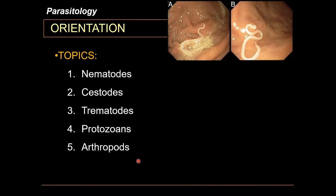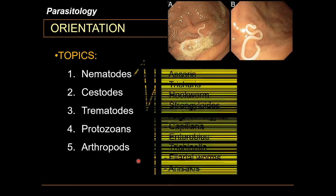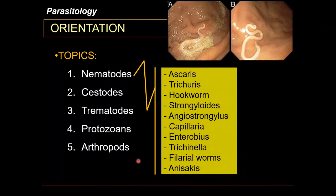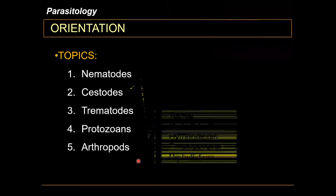Please memorize the parasites belonging to each classification, at least at the genus level. For nematodes, we have Ascaris, Trichuris, hookworm — which is a common term and not a genus name — Strongyloides, Angiostrongylus, Capillaria, Enterobius, Trichinella, filarial worms (also a common term), and Anisakis.